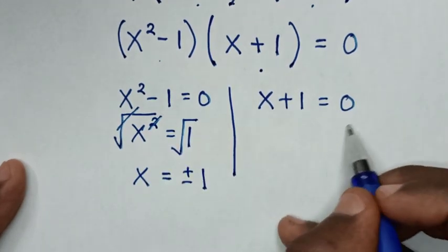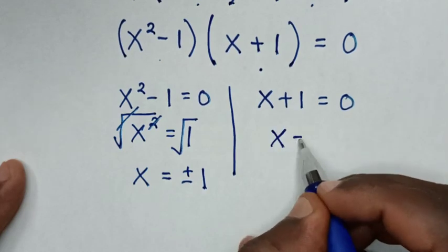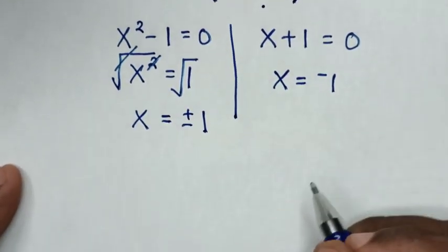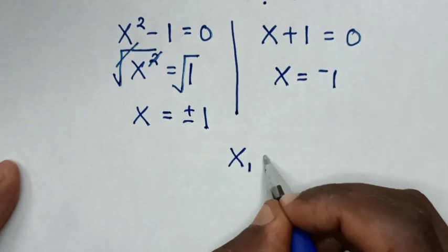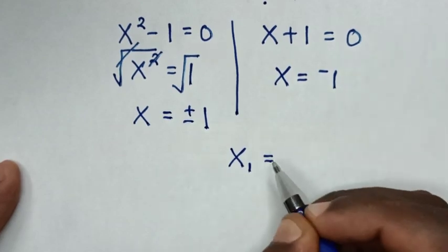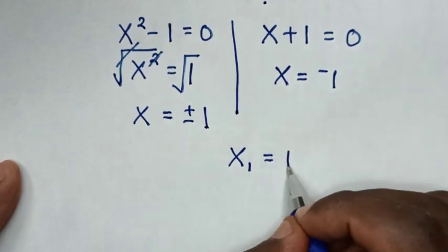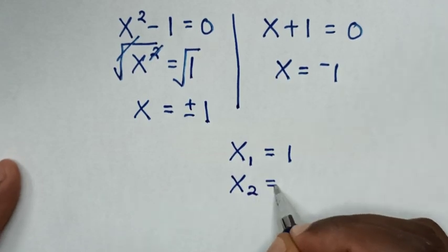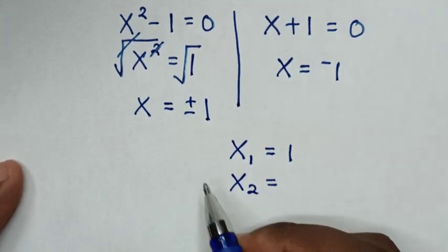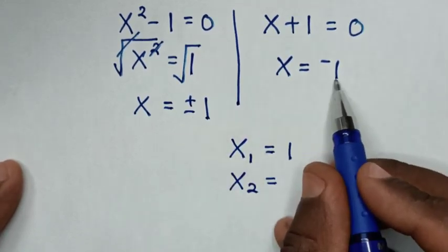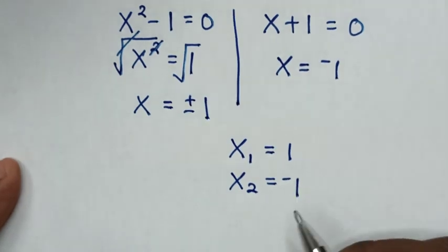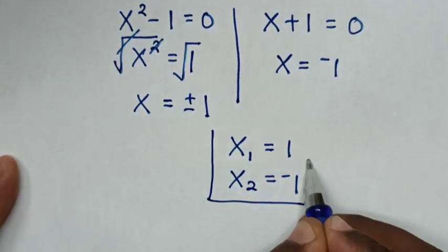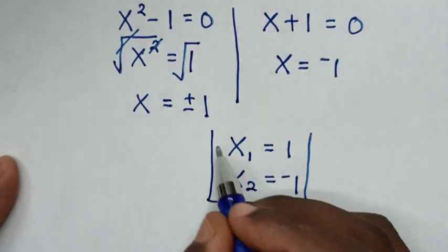From the second solution, x + 1 = 0, we take 1 to the right side, so x = -1. Therefore the values of x are: x = 1 and x = -1. These are all the values of x in this problem.